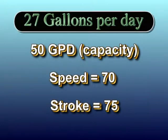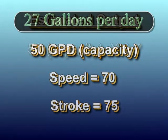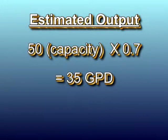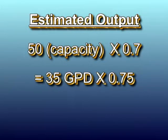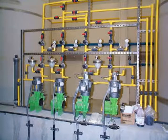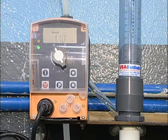...the pump should be delivering about 27 gallons a day. To get this estimate, the maximum output of 50 gallons per day is multiplied by the speed setting of 0.70, yielding 35 gallons per day, then by the stroke setting of 0.75, which gives about 27 gallons per day. Regardless of whether the manufacturer suggests this method, the best way to determine the efficiency of a pump is to do a pump calibration.